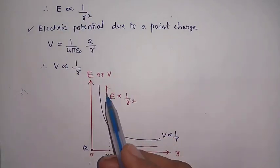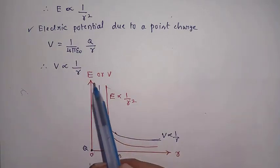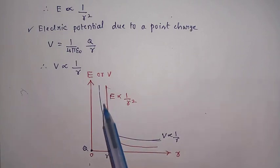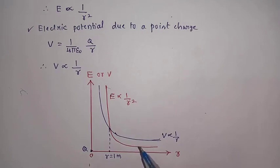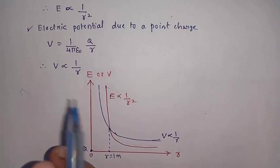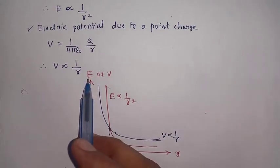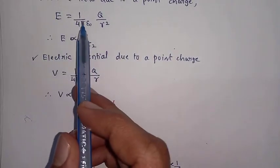E is inversely proportional to r squared, so its graph shows inverse square variation. The potential expression is also inversely proportional, but with a different rate of variation. To clarify how the electric field and electric potential curves differ, we assume that at distance equals one meter, both curves will meet — meaning at r equals one meter, both electric field and electric potential become equal.